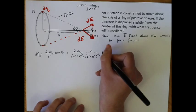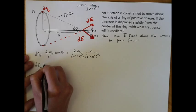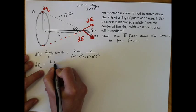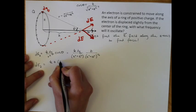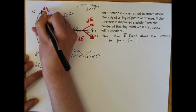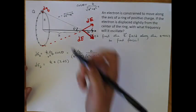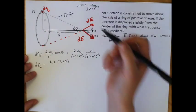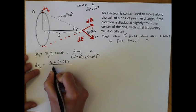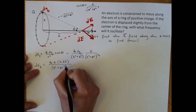So if we substitute that in here, we have k dq over little r squared will just be z squared plus R squared. And cosine theta is z over (z squared plus R squared) to the one-half. And that's going to be dE_z is k times z times dq.